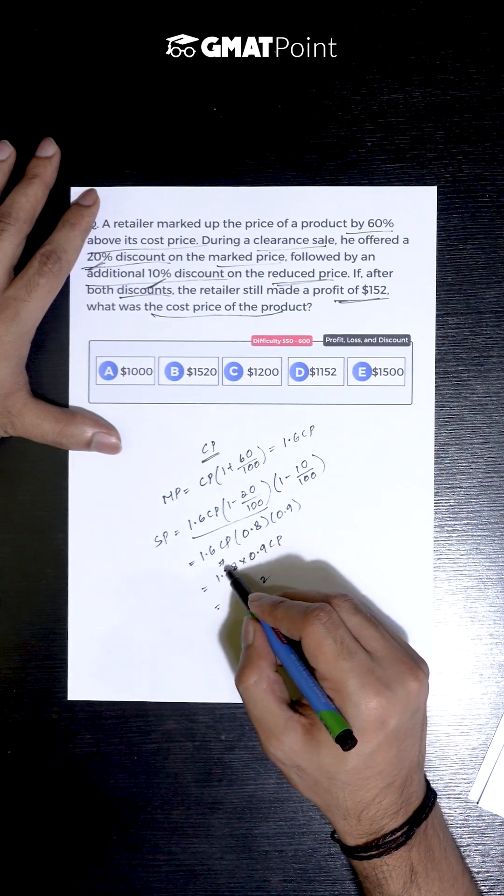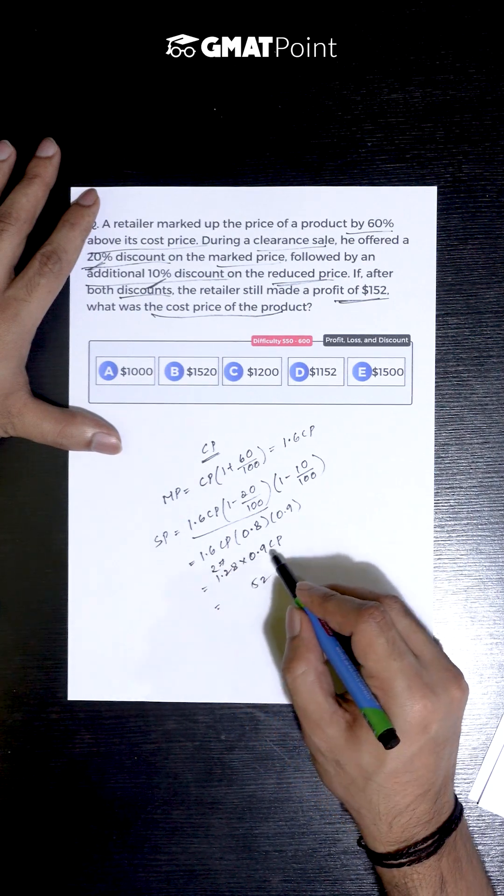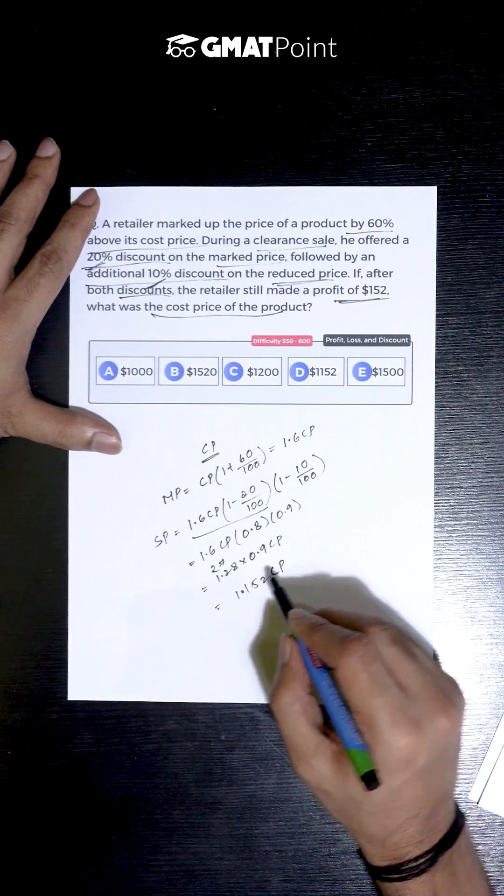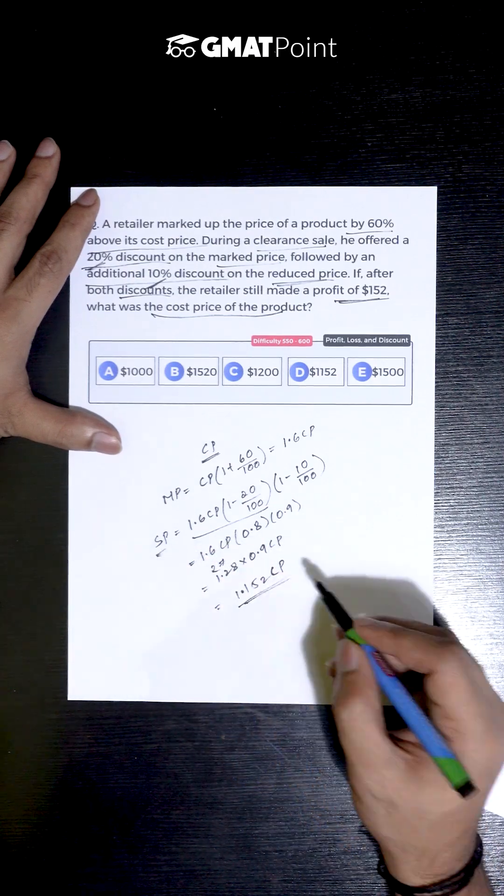Working through the calculation: 1.6 times 0.8 gives us 1.28, then 1.28 times 0.9. So the selling price is nothing but 1.152 CP.